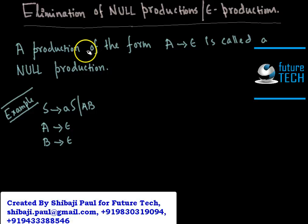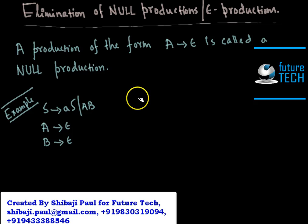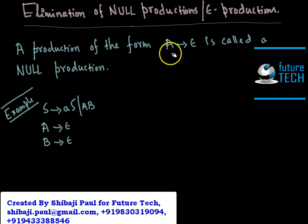In this tutorial, I am going to show you how to eliminate null productions or epsilon productions from a production rule. A production of the form A → ε is called a null production.